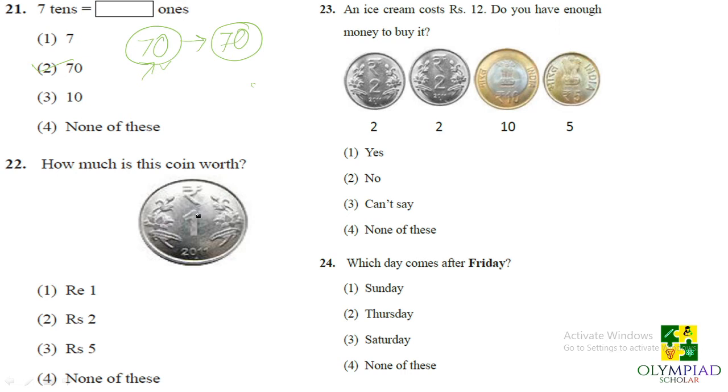How much is the coin worth? So this is a 1 rupee coin and definitely its worth is RE 1. An ice cream costs RS 12. Do you have enough money to buy it? That means you have these coins. So that means you have 2 plus 2 plus 10 plus 5. That means you have got like here 10 plus 5, 15, 17 and then you have got 19 rupees. So yes, you have got 19 rupees. So definitely you can buy the ice cream which costs 12 rupees. So answer is yes.